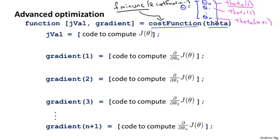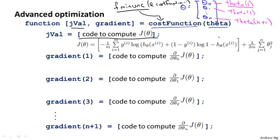So the two main things that the cost function needed to return were first jVal, and for that we need to write code to compute the cost function J of theta. Now, when we're using regularized logistic regression, of course, the cost function J of theta changes. In particular, now our cost function needs to include this additional regularization term at the end as well. So when you compute J of theta, be sure to include that term at the end.